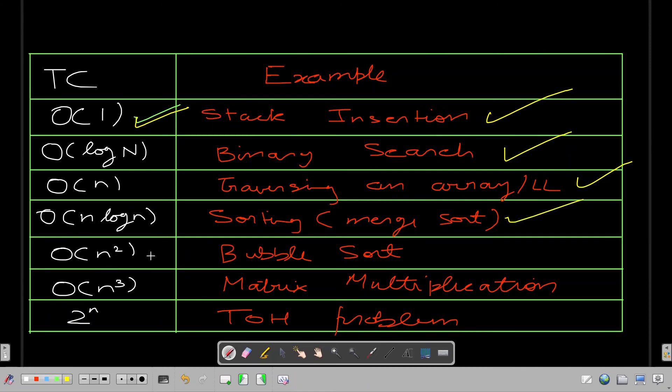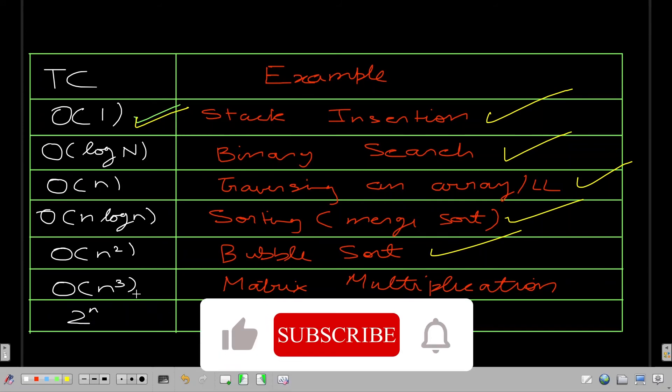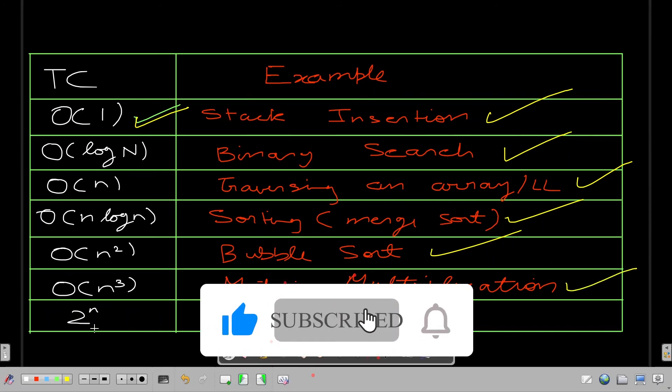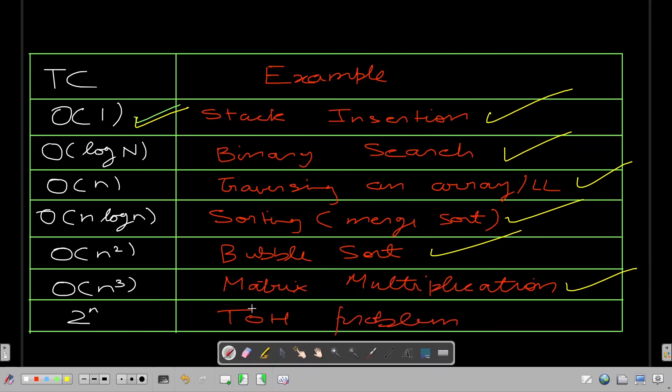Where do you see O of n square? In bubble sort. Where do you see O of n cube? In conventional matrix multiplication algorithm, the time complexity is O of n cube. Where do you see exponential time complexity? There's a very famous problem, the tower of Hanoi problem, which I'll try to cover in one of the tutorials. There the time complexity is 2 raised to power n.